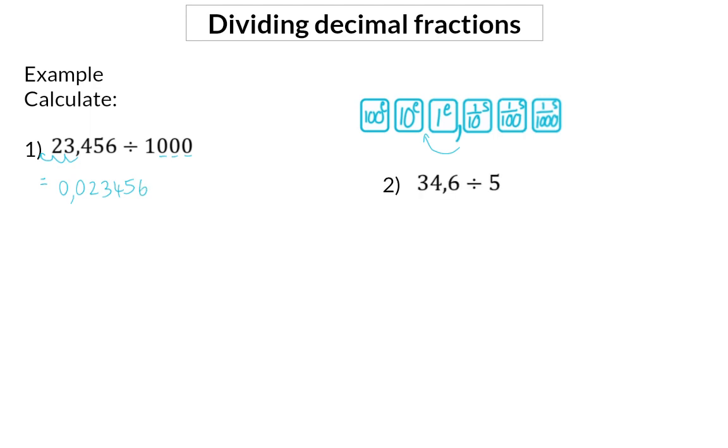Next up, when it comes to dividing by any integer other than a power of 10, we can make use of long division. The dividend of 34.6 is written on the inside, and this is divided by 5. Remember that for long division, we follow three steps every time. Firstly, you start off dividing, then you multiply, and then you subtract.